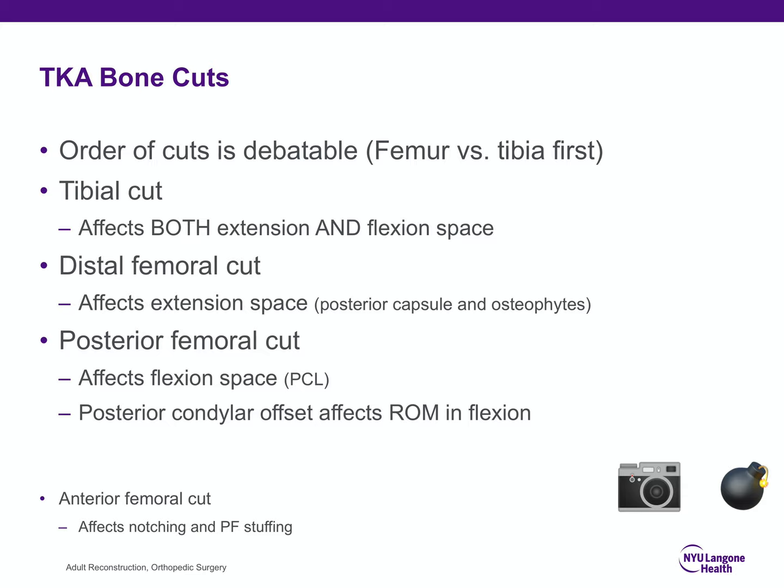For bony cuts in TKA, commit this to memory — it is essential for boards: the tibial cut affects both extension and flexion spaces; the distal femoral cut affects only the extension space; the posterior femoral cut affects only the flexion space. The anterior femoral cut is most important for notching and patellofemoral joint stuffing. The valgus cut angle for the distal femoral cut is determined from preoperative x-rays; most patients require approximately six degrees.